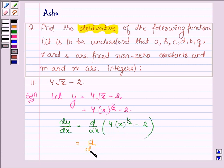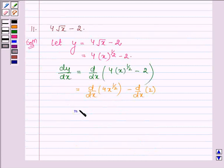This can be written as d/dx(4x^(1/2)) - d/dx(2). This is further equal to 4 times the derivative of x^(1/2) with respect to x, minus the derivative of a constant, which is 0.